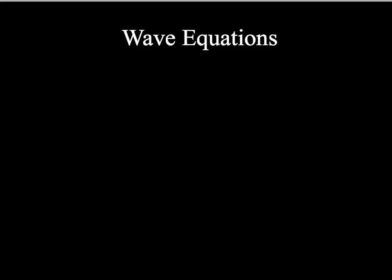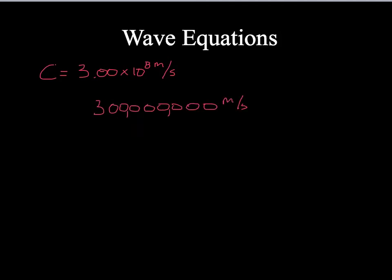Let's talk about how we can equate this with some math. Make sure you have these constants written in your notebook and highlighted, because you're going to need them several times throughout this unit. The first one is the speed of light: 3.00 times 10 to the 8th meters per second. If we were to put this out completely, it would be 3 with 8 zeros behind it — 300 million meters every second.